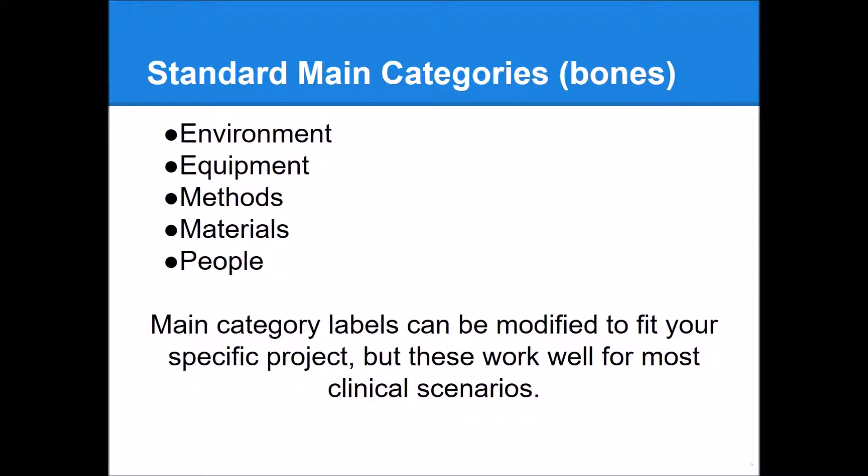You can use any main categories that you want, but these five are generally sufficient to cover just about any potential cause you can think of in a clinical process: environment, equipment, methods, materials, and people.